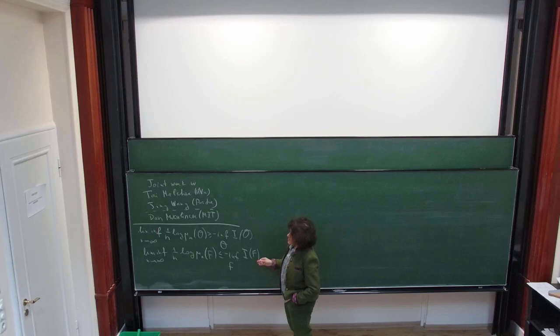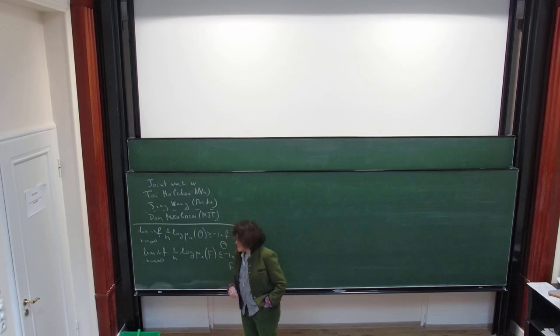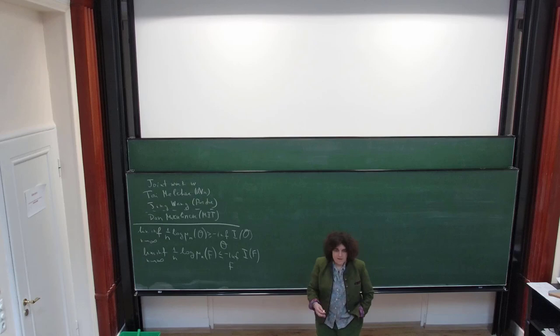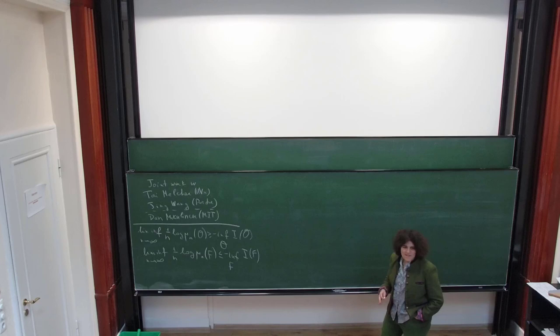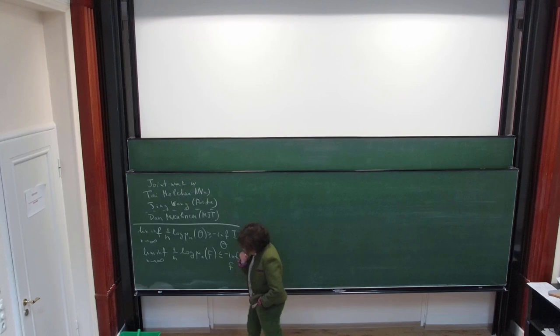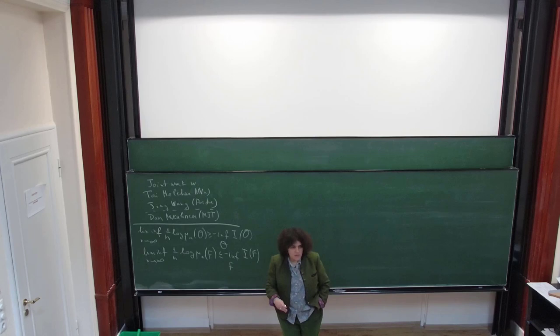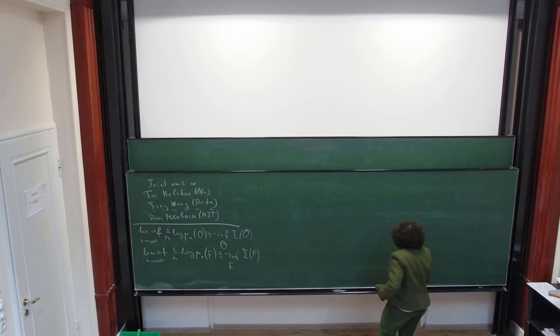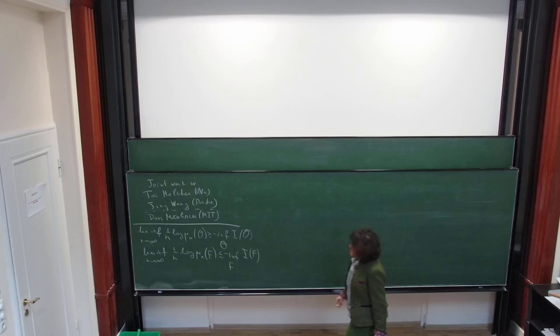I'll start with a short introduction to large deviations on metric spaces. Usually I skip this and talk about Euclidean space so that it's easier, but here I think I can start with a metric space and be okay with that. Then I'll explain what the main setting is, give a couple of examples of classical theorems, and then explain why we cannot do what was done there and why it's interesting.